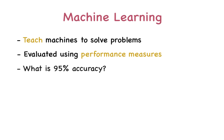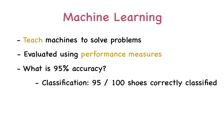Say a system has a 95% accuracy. In the context of classifying shoes as Nike and not Nike, a 95% accuracy means that for every 100 shoes, 95 of them were classified correctly. It's pretty straightforward.